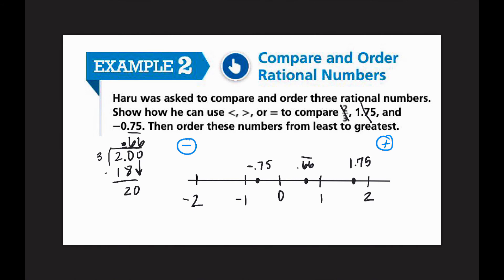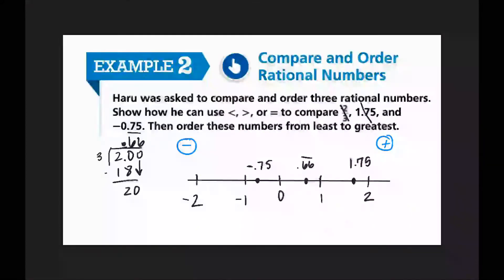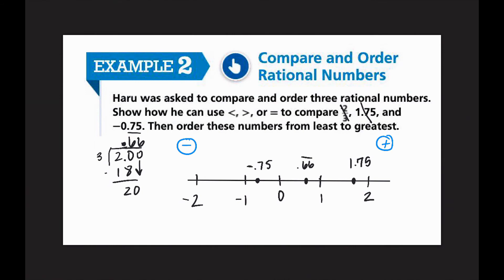Now that I've placed everything, I can use symbols to compare them. I'm going to order them from least to greatest. On a number line, least is furthest to the left and greatest is furthest to the right. So: negative 0.75 is less than 0.66, which is less than 1.75. I can also read that backwards: 1.75 is greater than 0.66, which is greater than negative 0.75.